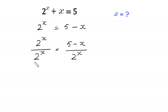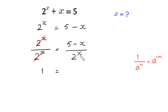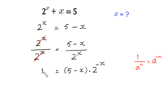Now this 2 to the power x will be cancelled out, and at the left side, 1 is equal to... According to the power rule, 1 over a to the power n is equal to a to the power negative n. We can write 5 minus x over 2 to the power x as 5 minus x times 2 to the power negative x. Moving terms, we get: 5 minus x times 2 to the power negative x is equal to 1.